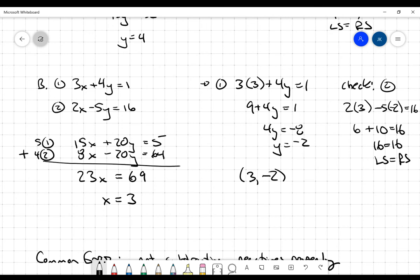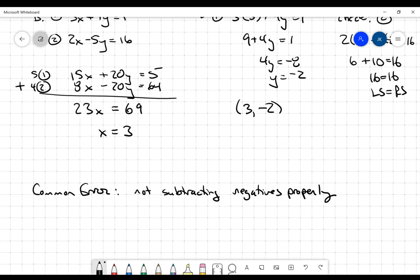That is the solution I'm looking for, 3 comma negative 2. And again, notice that the common error here is going to be when people do not subtract negatives properly. Or worse yet, they don't basically distribute the negative to everything. So they subtract the first terms and then they add the other ones as they go along.